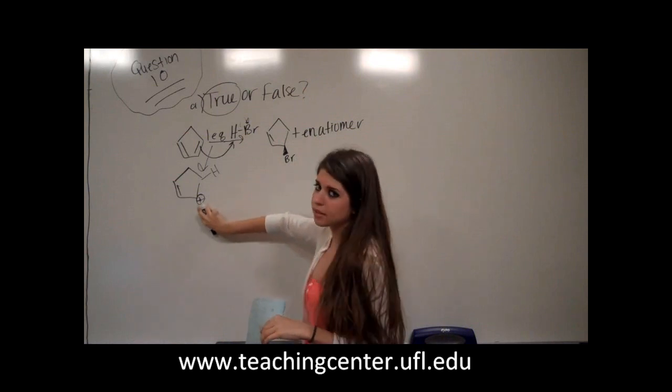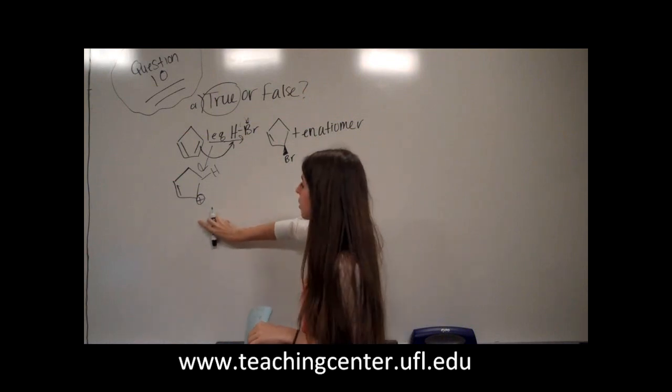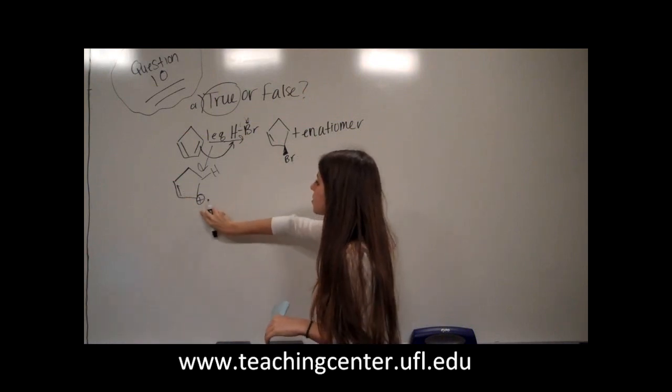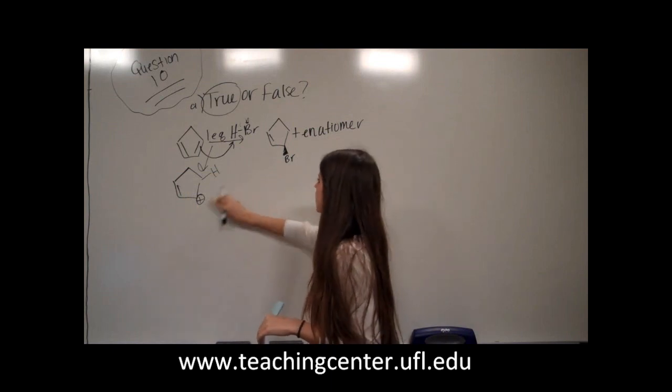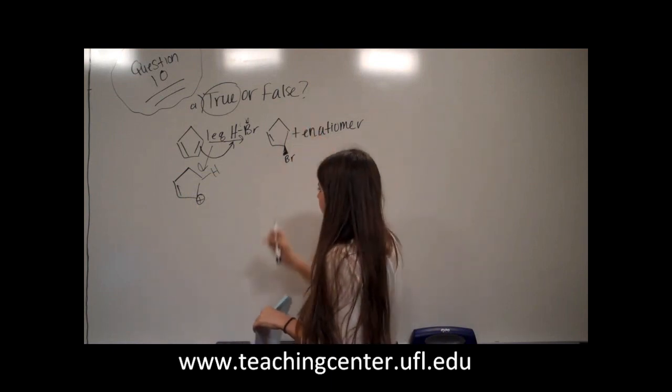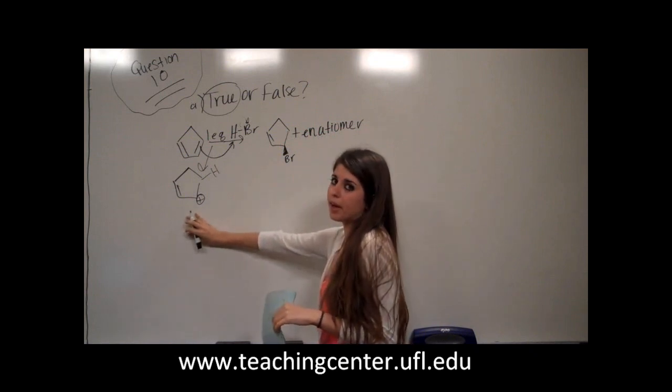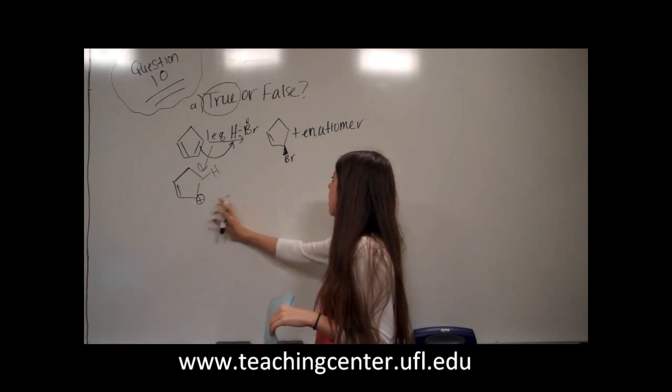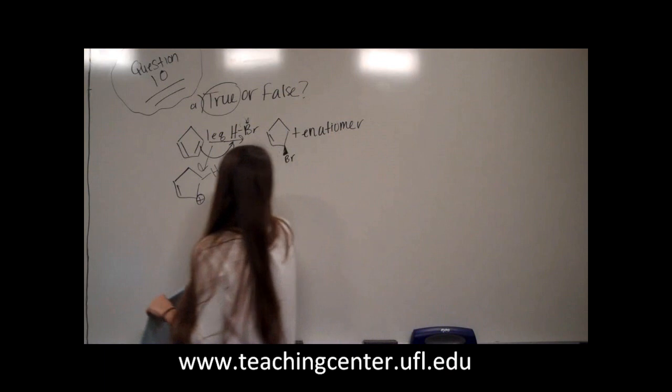allylic is a carbon away from a double bond, I'm sorry. So allylic would be more stable than something that was secondary. So that's how we know that our carbocation is in the right spot and that this product is actually going to form.